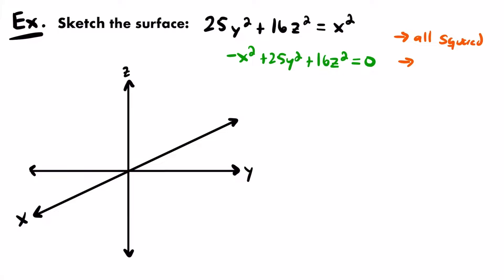Now we can clearly see not all of the variable terms are positive — one of them is negative, specifically the x term. So we have one negative term. One more thing to notice is that we have no constant. These three variable terms equal zero, and there's no other constant term. It is zero and will stay zero. So we have no constant.